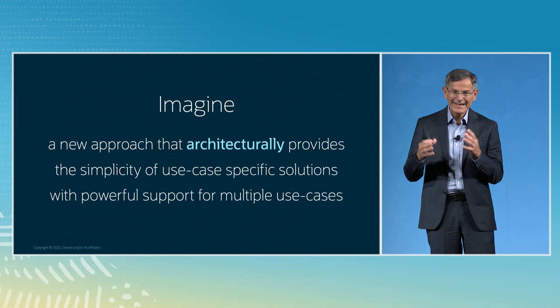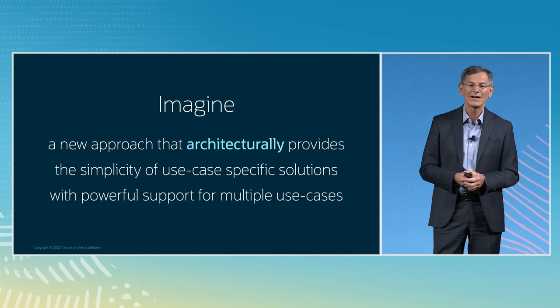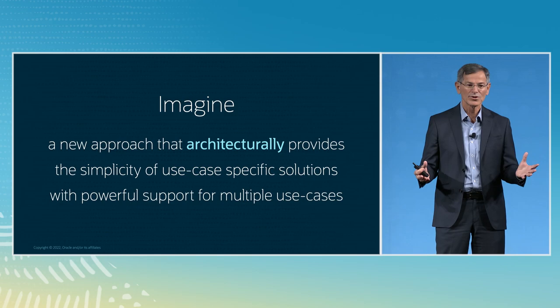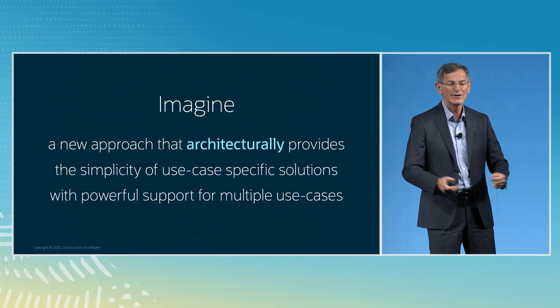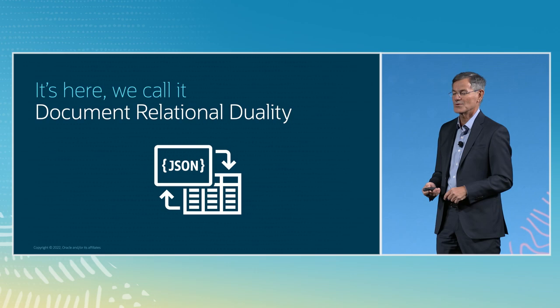Nothing has really solved the problem as well as we think we can now. So we have a new approach: to architecturally provide the simplicity of a use case specific solution like a cake mix, along with the power of multiple use cases like cooking with basic ingredients. We call that Document Relational Duality. To help with that, I'm bringing two experts on stage: Terthankar Lahiri, a database expert, and Beta Hammerschmidt, a JSON expert at Oracle.